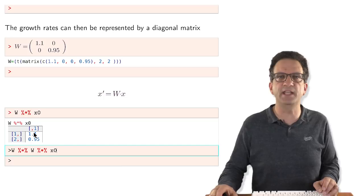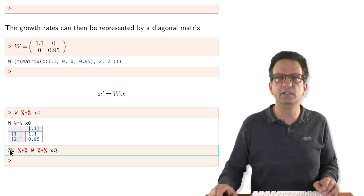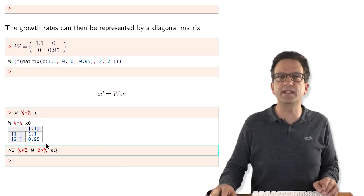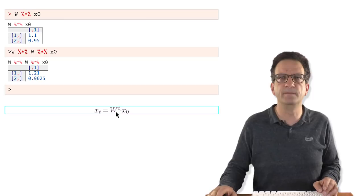So type 1 grew by 10%, type 2 decreased by 5%. To apply W twice, we apply W times W times X0 — we put W on the left because X is a column vector. If X were a row vector, we'd add W on the right. We can find X at time T by taking the matrix power W to the power of T times X0.